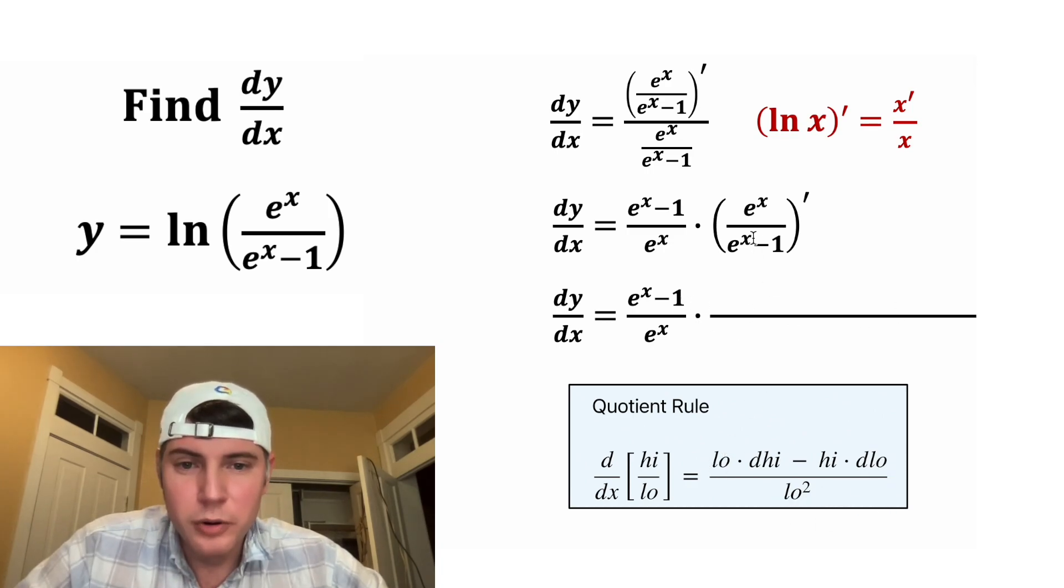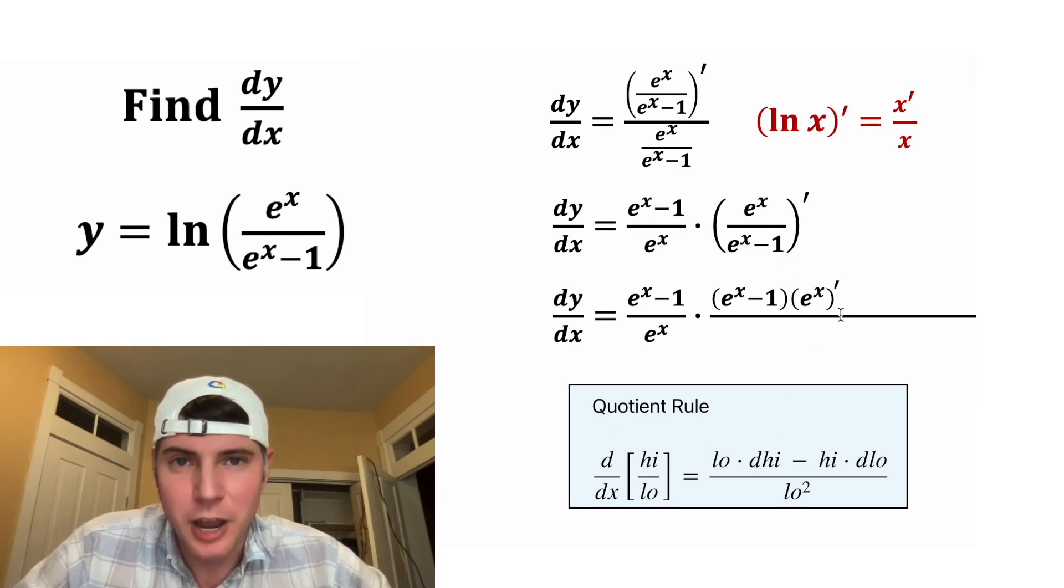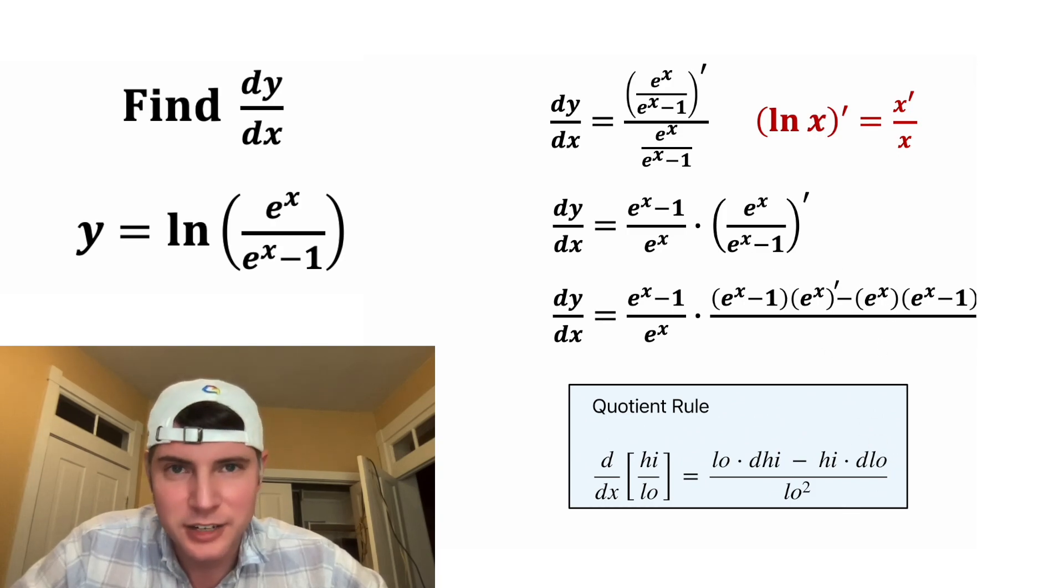And it's just low times the derivative of high minus high times the derivative of low over low squared. So here's our big bar. So the low is this e to the x minus 1, and then d high is going to be the derivative of the top function minus. And then the high function is e to the x. And then d low is the derivative of this e to the x minus 1. And on bottom, we have low squared, so it's going to be e to the x minus 1 squared.